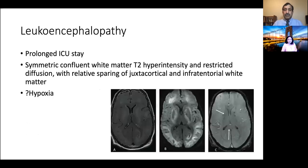Diffuse leukoencephalopathy was a finding seen mostly in patients who had been in the ICU for a long time. As seen in this example, there is confluent FLAIR hyperintensity in the white matter and in the basal ganglia with corresponding restricted diffusion, likely related to hypoxia — representing diffuse hypoxic leukoencephalopathy. This patient also has micro-hemorrhages, with hemorrhages in the basal ganglia and corpus callosum.